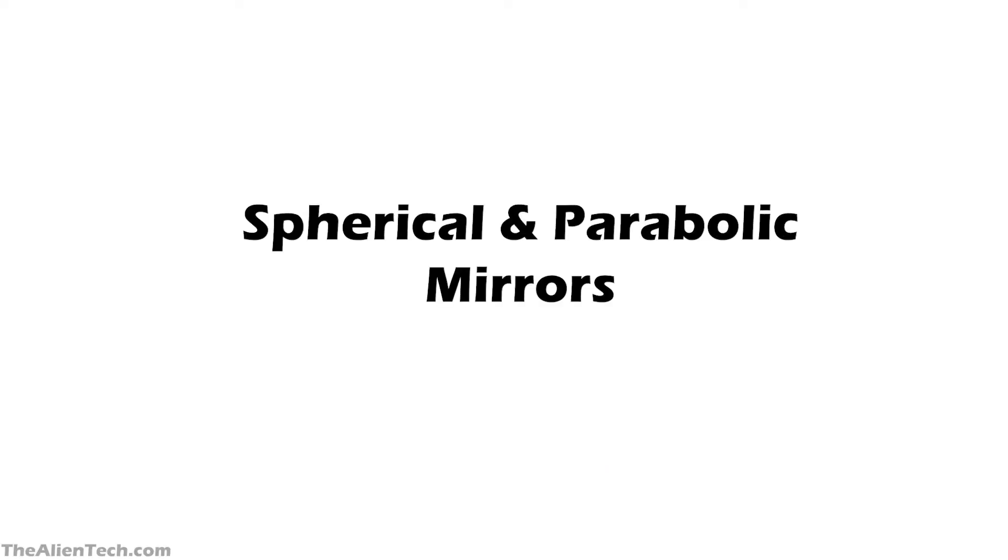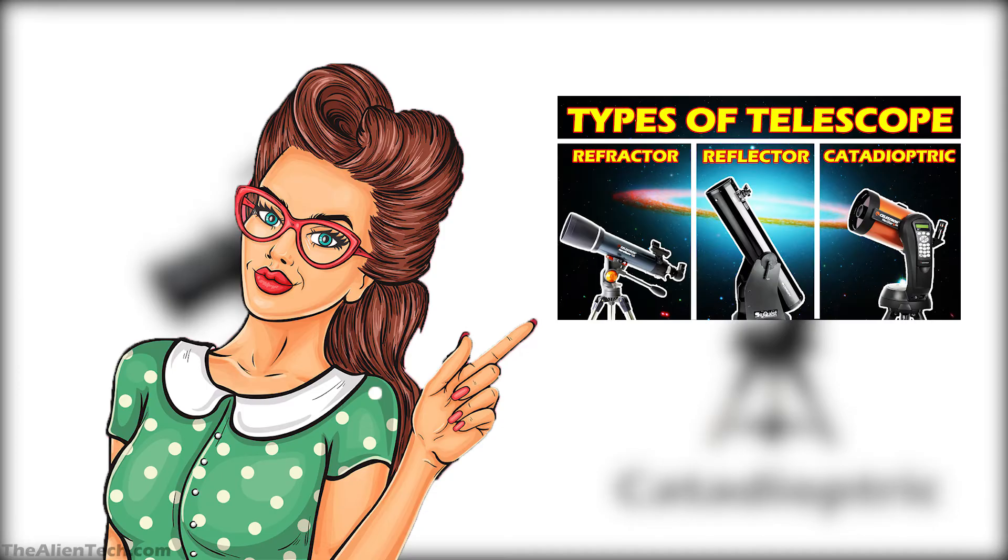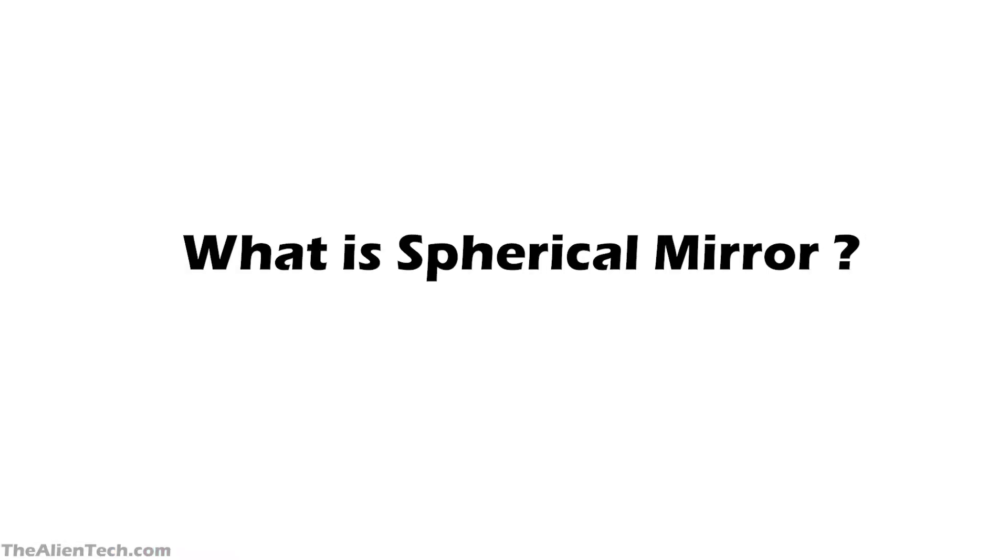Usually, the specifications of mirror types are mentioned in reflecting and catadioptric type telescopes. If you don't know the different types of telescopes, then please watch this video on the channel. Let's see what spherical mirrors are.